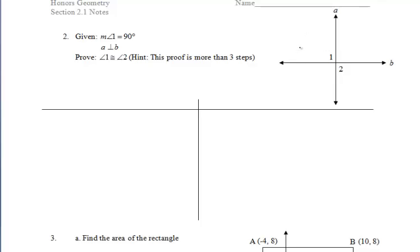In example two, we'll be focusing on a proof. We're given that the measure of angle one is 90 degrees. And we also know that line A is perpendicular to line B. So we can add those tick marks based off of what we just talked about in the first part of the notes. In the end, we want to prove that angle one is congruent to angle two.